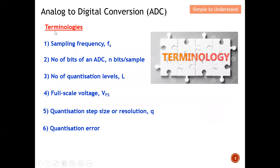Let's start by describing the terminology used to describe the process of Analog to Digital Conversion. There are 6 important terminologies you should know. Firstly, sampling frequency — I described what is sampling frequency in ADC in Part 1, including a quick case study based on low and high sampling rates. This sampling rate basically determines whether we are able to fully recover the analog signal or not.